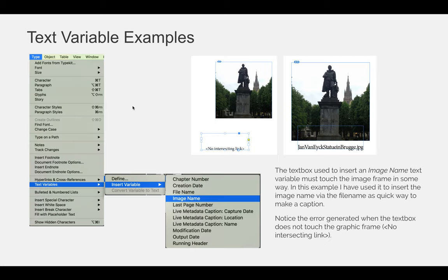You can also use text variables to do some easy automation of quotes and descriptions of images and things like that. If you use the type menu, text variables, insert variable, and then image name, you can insert the name of the image that you are placing in your file. The text box used to insert an image name text variable must touch the image frame in some way.